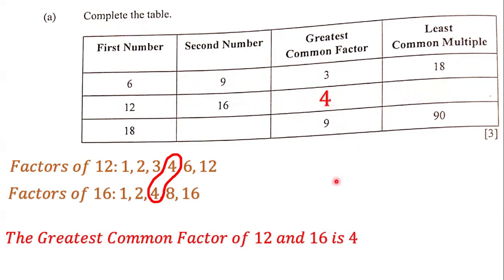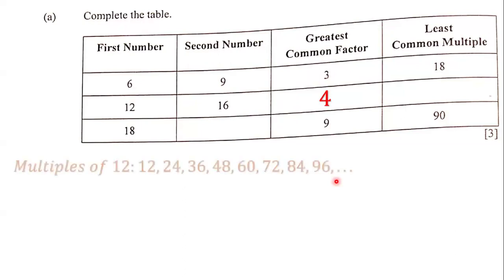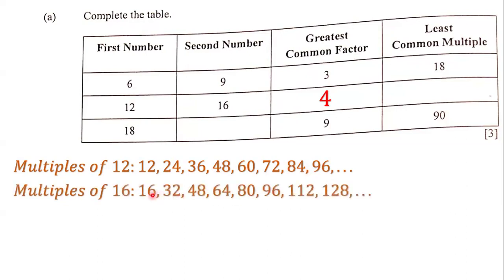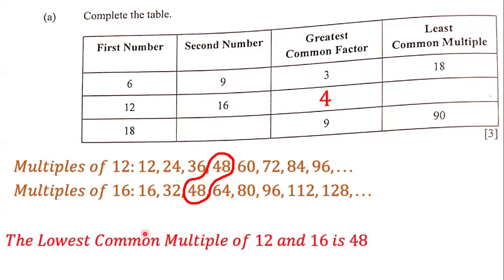Next we need to find the least common multiple of 12 and 16. The multiples of 12 are 12, 24, 36, 48, 60, 72, 84, and 96. The multiples of 16 are 16, 32, 48, 64, 80, 96, 112, 128, and so on. The lowest common multiple between these two numbers is 48, so we put 48 here.